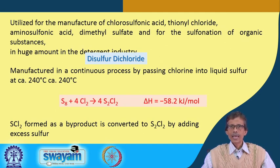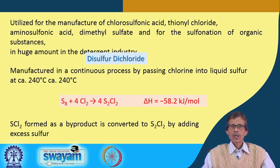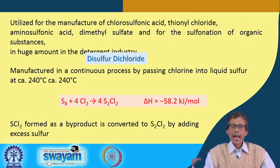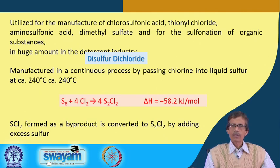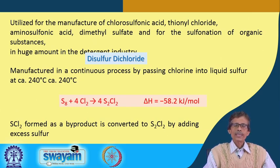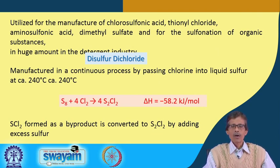One example of a detergent micellar molecule is sodium dodecyl sulfate (SDS). Dodecyl means a 12-carbon chain alcohol — also commercially known as lauryl alcohol. The OH group of the alcohol is converted to a sulfate by adding an SO₃ group on the oxygen, giving sodium dodecyl sulfate — a useful micellar molecule. Large amounts are consumed in the detergent and cosmetic industries.